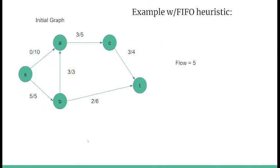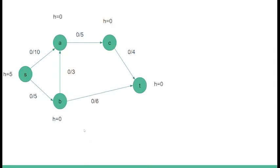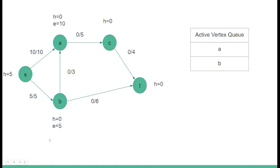We will now do a simple walkthrough of the algorithm with the FIFO heuristic on the graph shown. With this initial graph, we have a flow of five, which can obviously be improved on. To start, we initialize the flow coming out of each node to be zero, and the height at each node to be zero, except for the source. The height at the source is five, which indicates there are five nodes in the graph. We then send the maximum capacity out of the source, which is 10 going to A and five going to B, and we add A and B to our active vertex set.